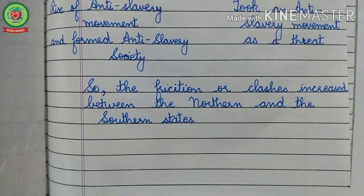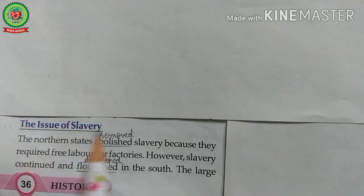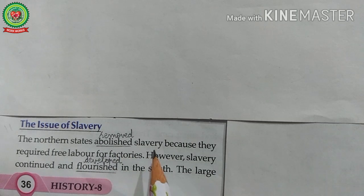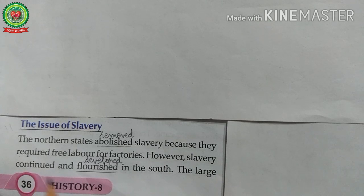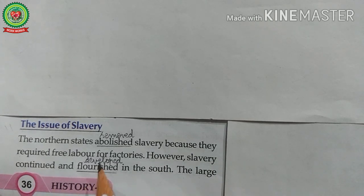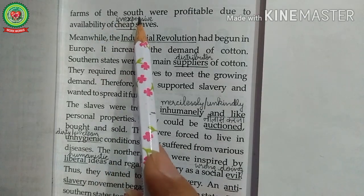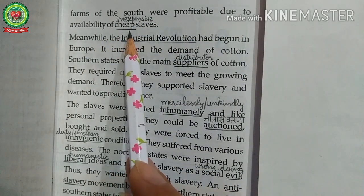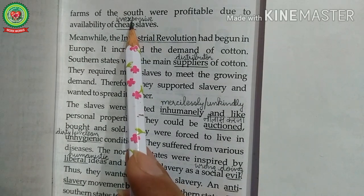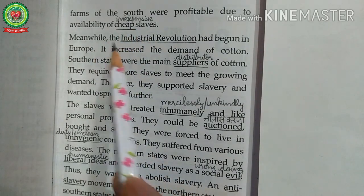Now let us read from the book. The issue of slavery: the northern states abolished slavery because they required free labor for factories. However, slavery continued and flourished — meaning developed — in the south. The large farms of the south were profitable due to availability of cheap, meaning inexpensive, slaves.